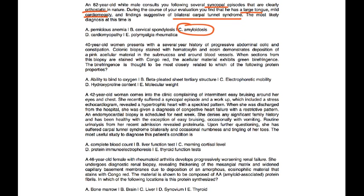Next one, 40-year-old woman presents with a several-year history of progressive abdominal colic and constipation. Colonic biopsy, stained with hematoxylin and eosin, demonstrates deposition of a pink acellular material in the submucosa and around blood vessels. When sections from the biopsy are stained with Congo red, the acellular material exhibits a green birefringence. The birefringence is thought to be most closely related to which of the following properties. Well, of course, we're talking about amyloidosis again. And if you remember earlier in the video, I talked about how the protein that's used for identification has a classic beta-pleated sheet appearance. So that would be choice B, beta-pleated tertiary structure.